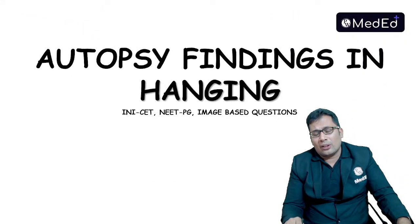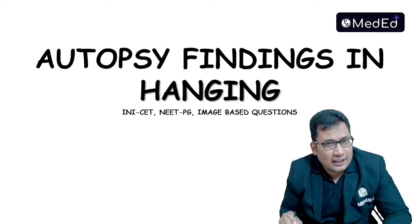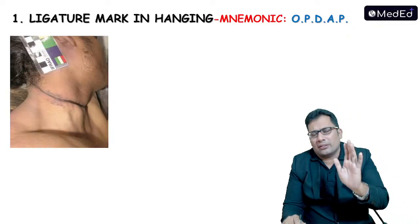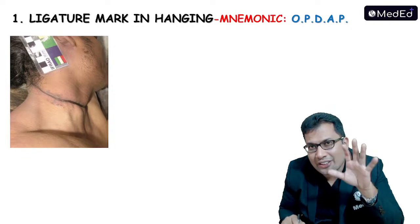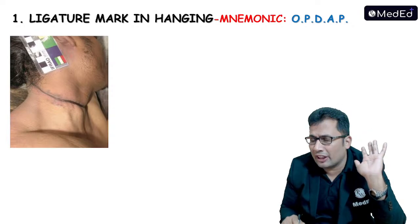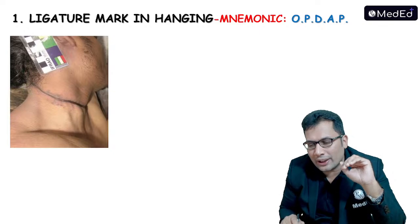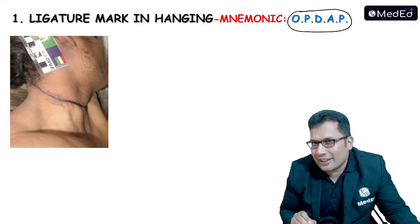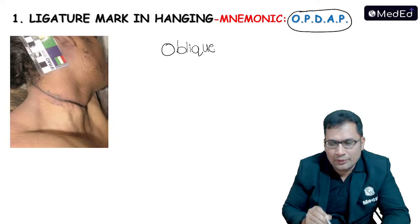Now the very important topic — autopsy findings in hanging. The most important finding is the ligature mark. The mnemonic for ligature mark characteristics in hanging is OPD AP. O is for oblique — it is oblique in direction, not transverse. P is for partial — it is incomplete and absent at the site of the knot. D is for dry and hard, sometimes black or brown in color, with the classical finding known as parchmentization.